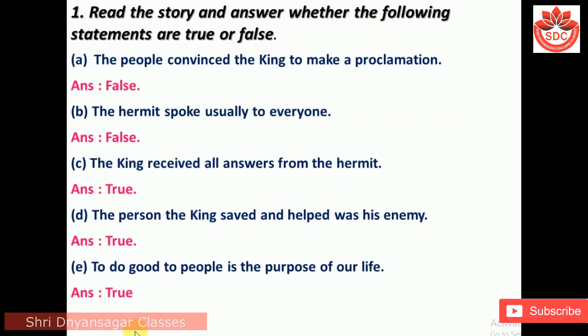Question 1: Read the story and answer whether the following statements are true or false. A. The people convinced the king to make a proclamation — False. B. The hermit spoke usually to everyone — False. C. The king received all answers from the hermit — True. D. The person the king saved and helped was his enemy — True. E. To do good to people is the purpose of our life — True.